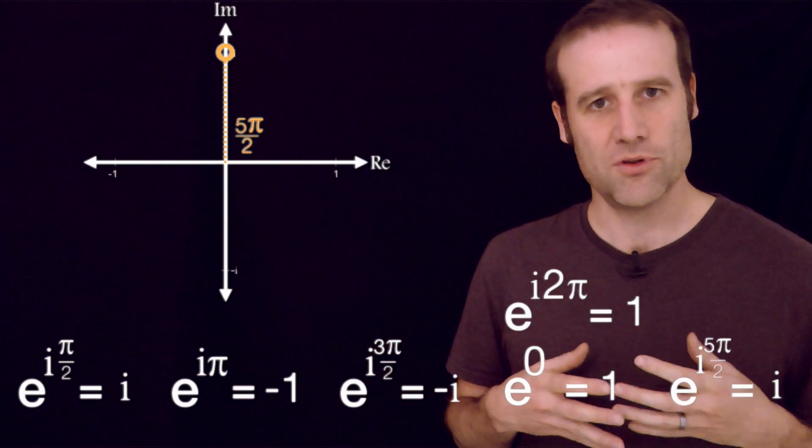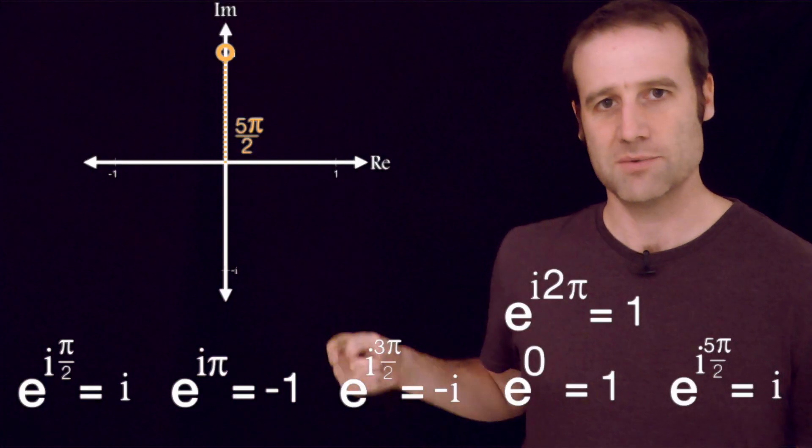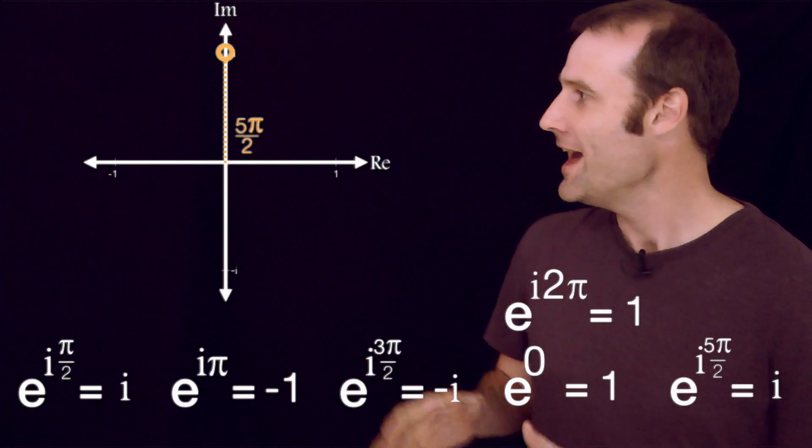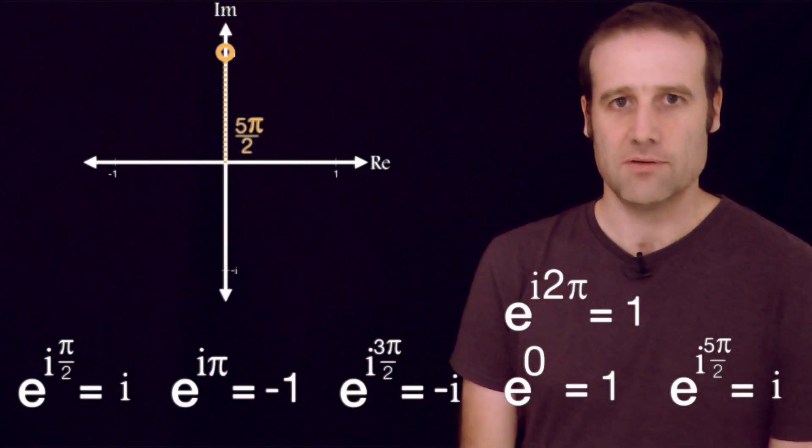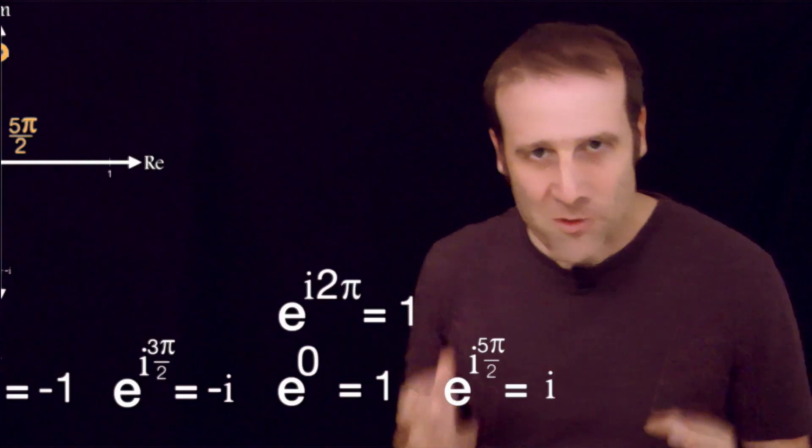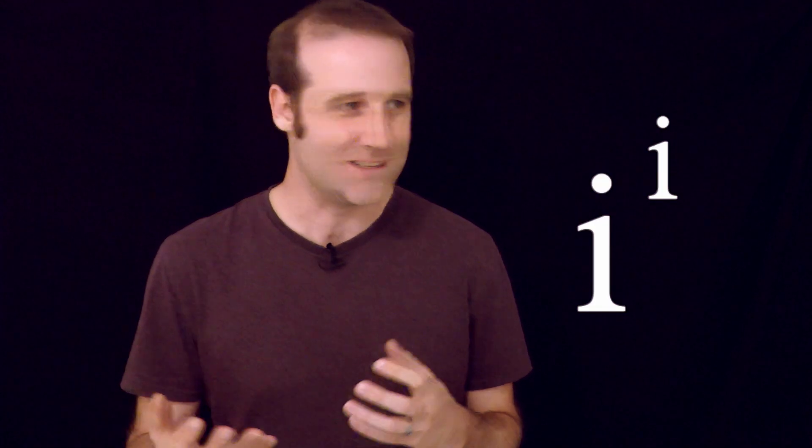So here we have all the fantastic identities, including the particularly famous one over there. But it's just examples of Euler's formula. What I want to look at is the much more exciting calculation of what is i to the power of i. What is the imaginary number to the power of the imaginary number? Is it going to be complex? Is it going to be real? Is it just in terms of i? Is it a whole new type of number again?